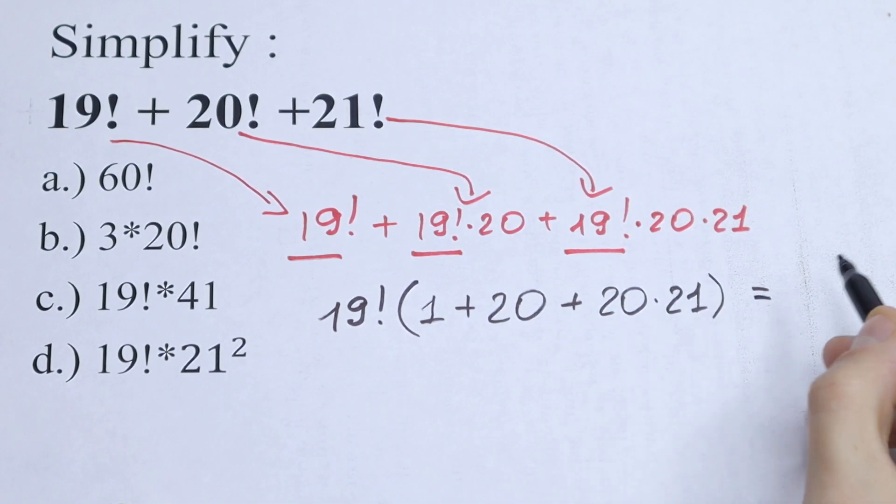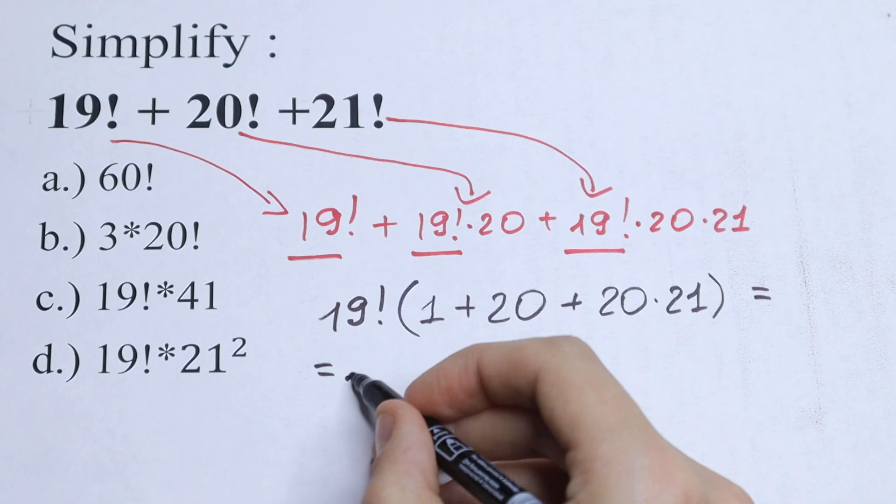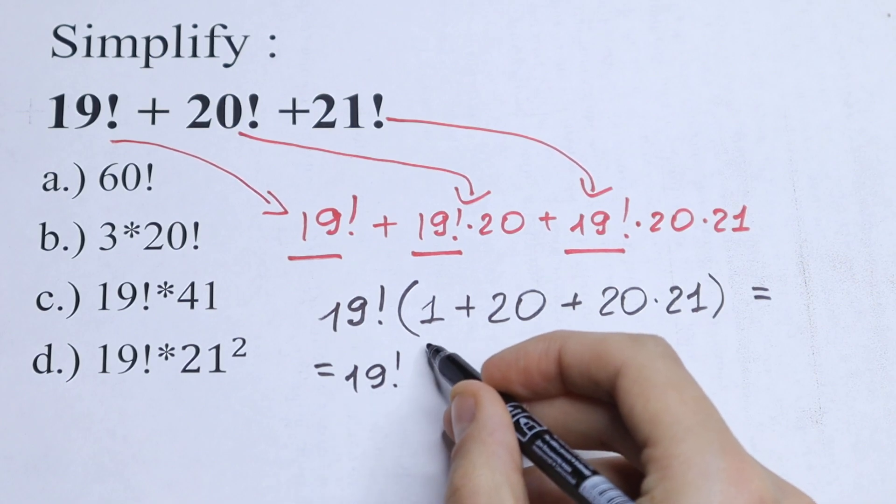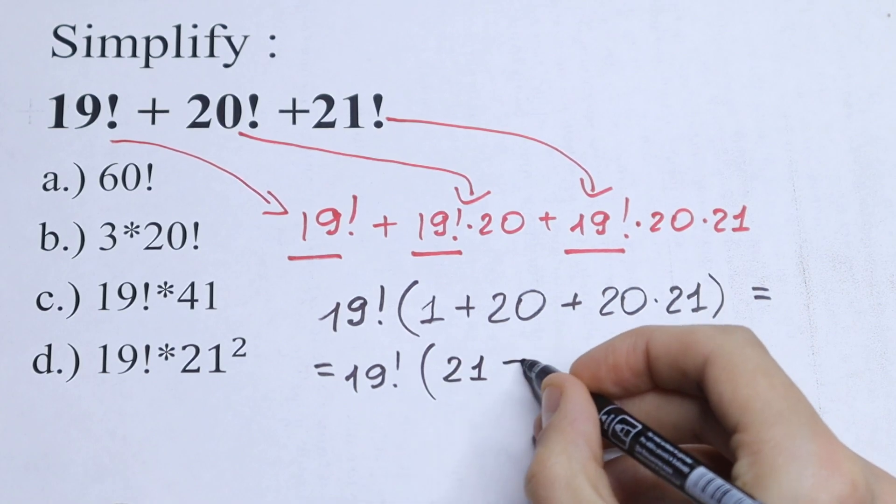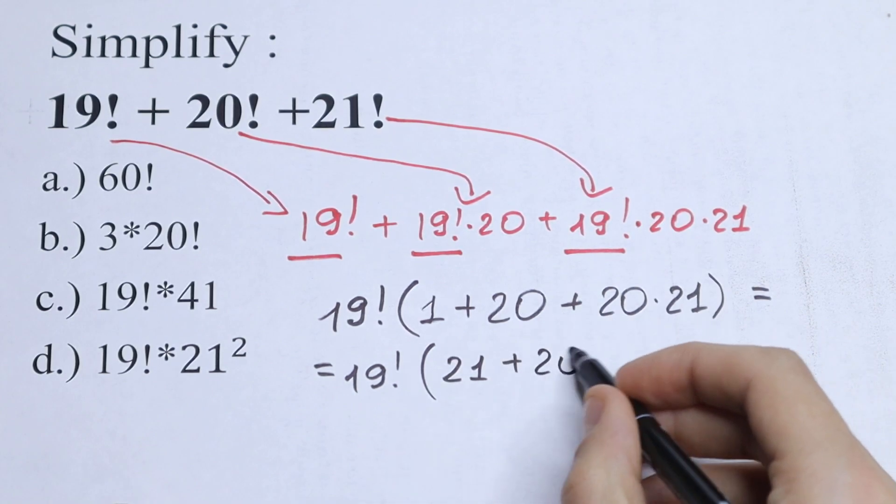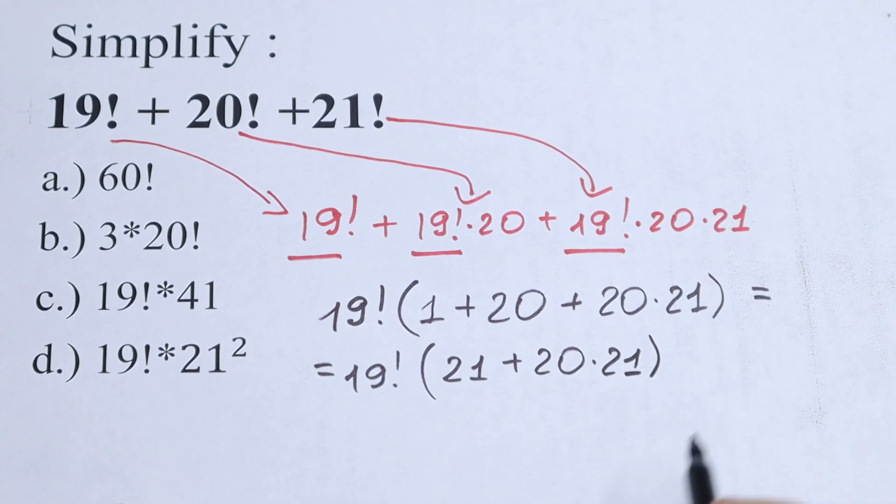It will be equal to 19 factorial, and let's add all of these in our parentheses. So we will have 21 plus 20 times 21. As you can see we have 21 plus 20 times 21.